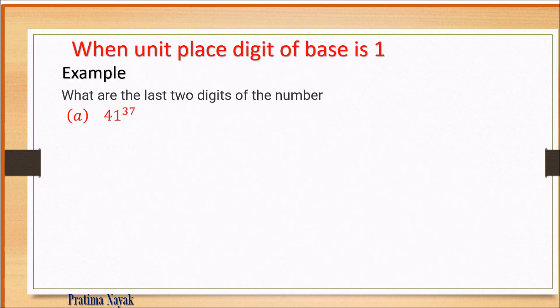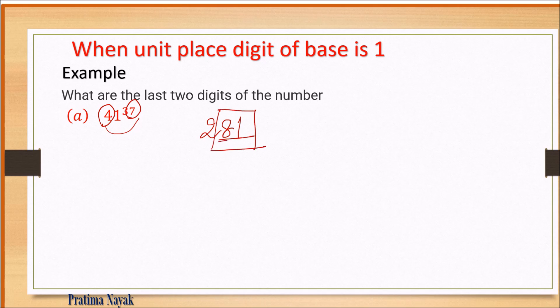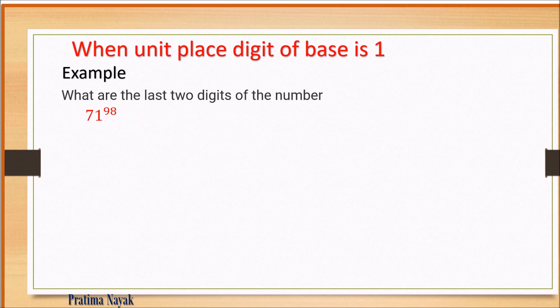So the answer is 51 — it's very simple. Another example: 41 to the power 37. The answer ends in 1. Now 4 multiplied by 7 is 28, so 8 goes in the 10th place, giving 81 as the last two digits. Similarly, 71 to the power 98: the answer ends in 1, and 7 times 8 is 56, so we take 6. The last two digits are 61.